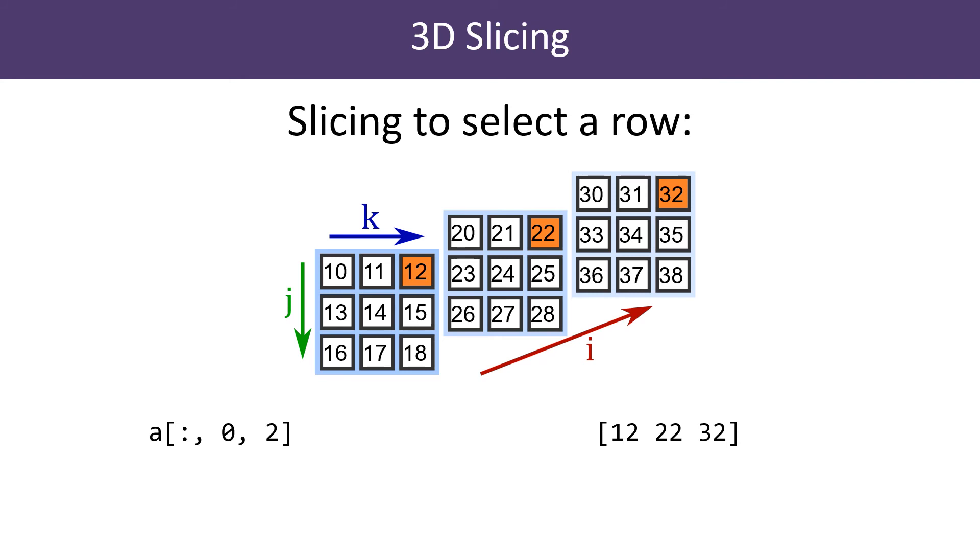In this next example, we have used a slice for the first dimension, but we have used index 0 for the row and index 2 for the column. This selects a one dimensional row composed of the corresponding elements in each slice. It is possible to select a row along any axis using the same technique.